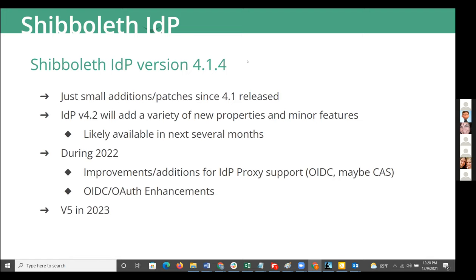In IDP version 4.1.4 there are some small additional patches since the first release of 4.1. Version 4.2 will add a variety of new properties and minor features. During 2022, the roadmap plan for SHIB includes improvements and additions for proxy support — adding additional protocols to proxy to, beyond the SAML IDP proxying added in 4.1.4. They're planning support for proxying to an OIDC or even a CAS server, and continuing to enhance OIDC and OAuth support built in via the plugin model. Version 5 is planned for 2023.